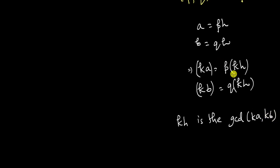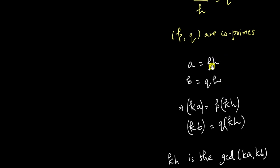Right? This is what it means. Because kh divides ka and we get p and kb divides kh and we get q and p and q are co-primes. So we have just used the reverse of the property.